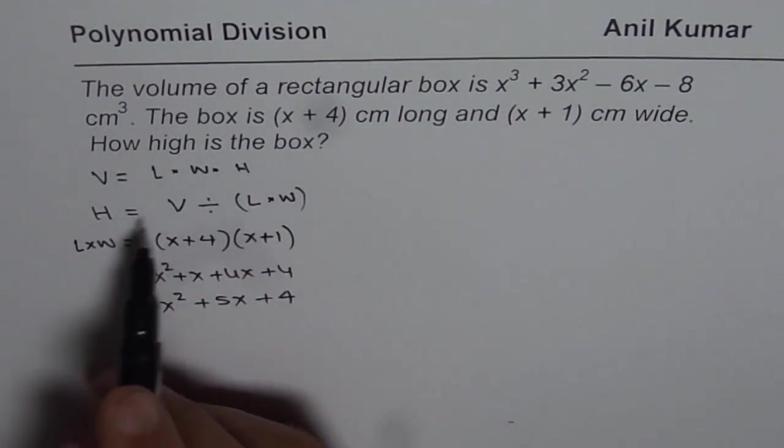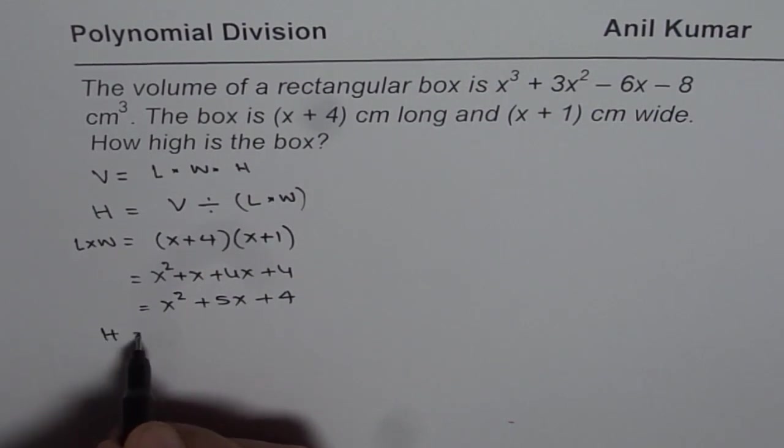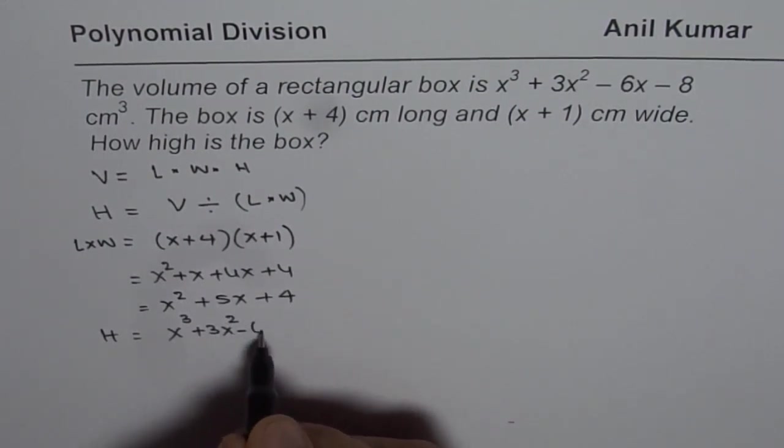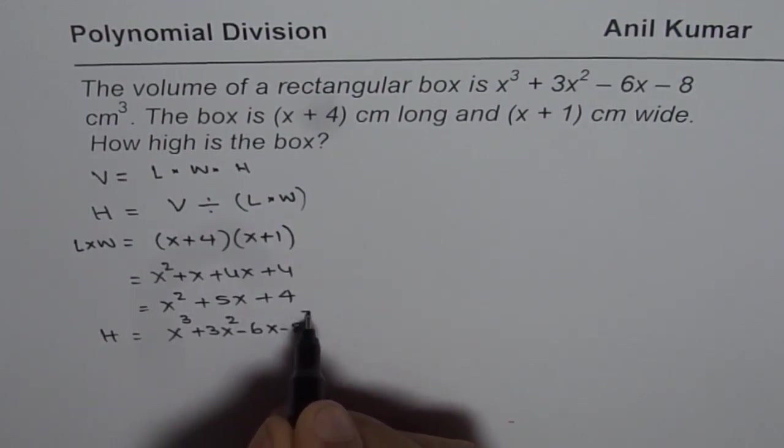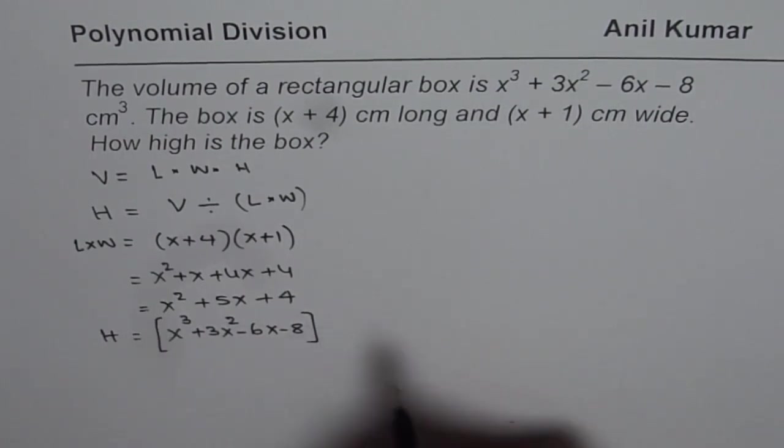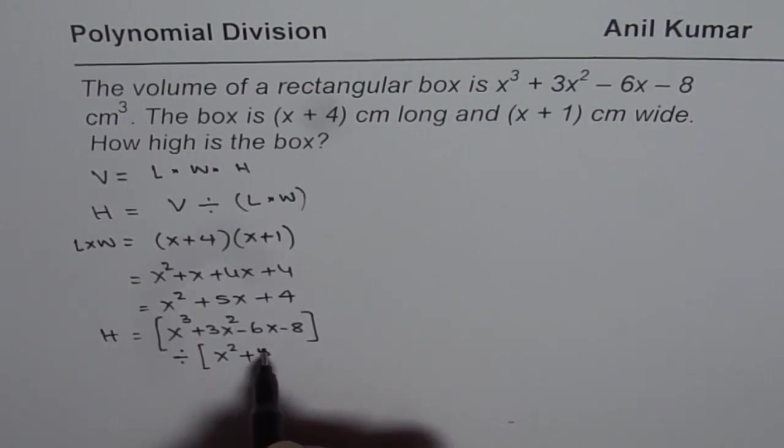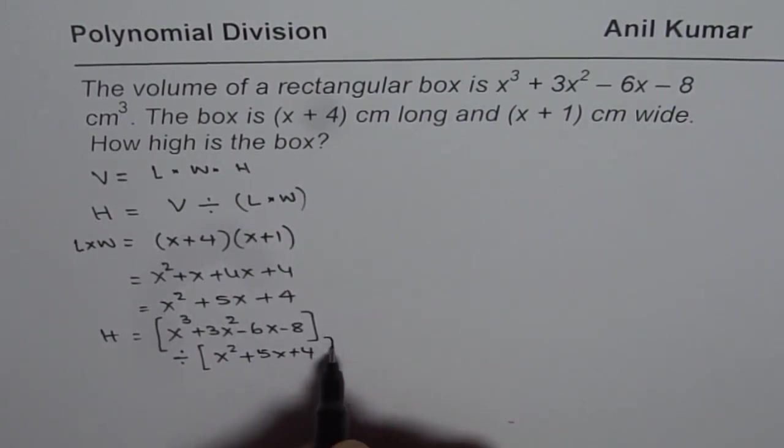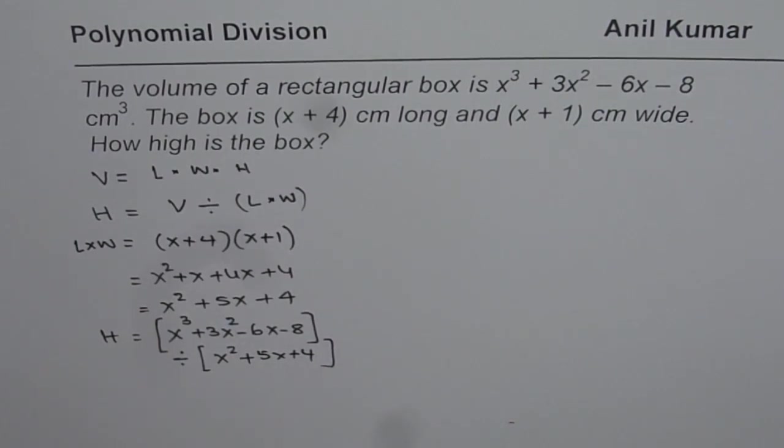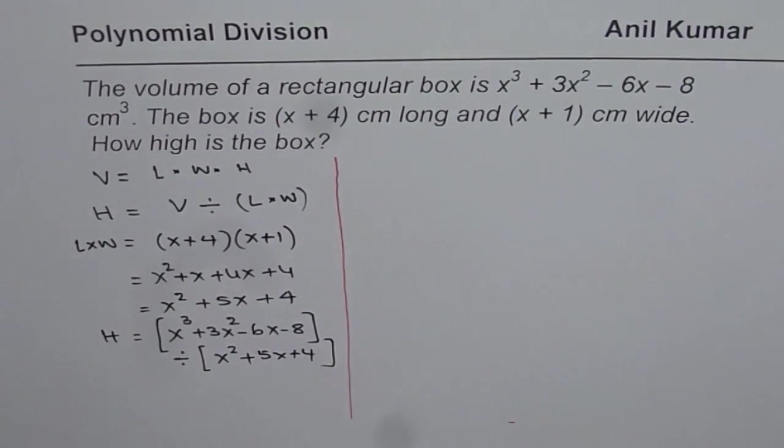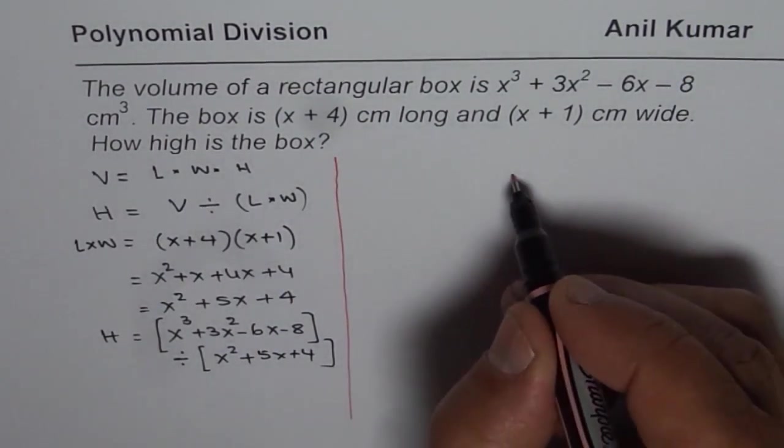Now we can find height by dividing volume which is x³ + 3x² - 6x - 8. This expression will now be divided by the expression x² + 5x + 4. That is how the question is to be done. So I have just given you the background and now let us divide and find the answer.